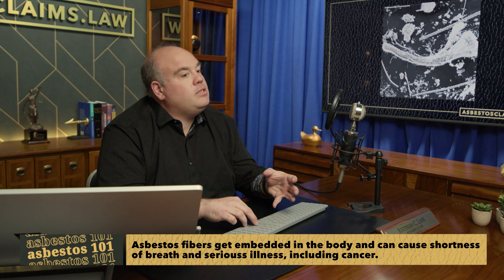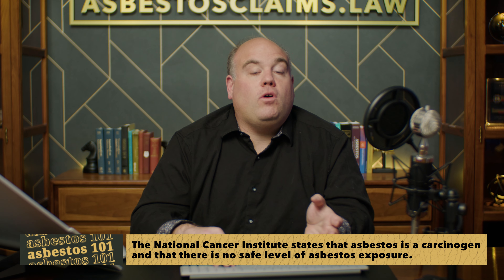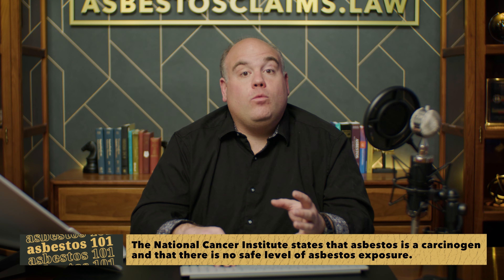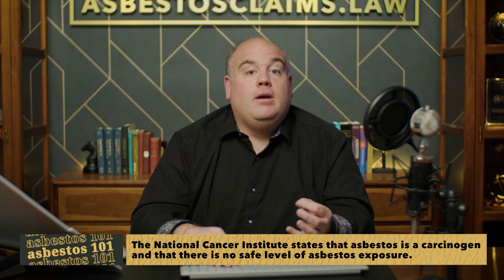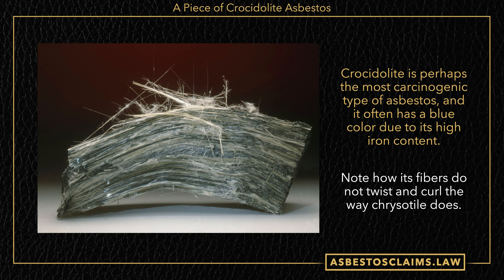That's chrysotile. Let's take a look at crocidolite asbestos. It's considered by some experts to be perhaps the most carcinogenic type of asbestos — the kind most likely to cause cancer. All varieties of asbestos can cause cancer, but there's debate over which is the most cancer-inducing. You'll see this one is kind of blue, because it has a high iron content. The crocidolite fibers look like javelins or needles or spears — a totally different type, more typical of members of the amphibole family.